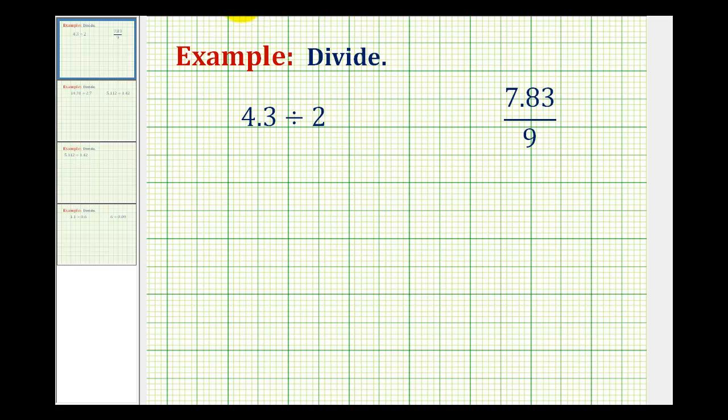We want to divide a decimal by a whole number. Here we have 4.3 divided by 2, and here we have 7.83 divided by 9. Remember division can be expressed in several ways.